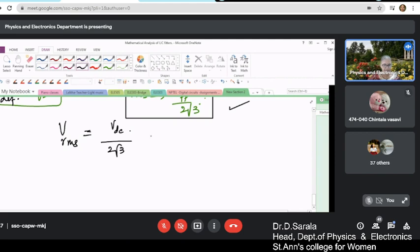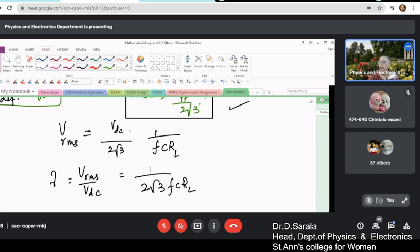And hence your ripple factor is given by v_rms by v_dc, and when you simplify it is 1 by 2√3 · f · c · R_L for a half wave rectifier, and that is equal to 1 by 4√3 · f · c · R_L for a full wave rectifier.